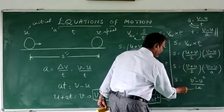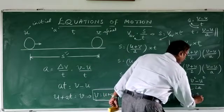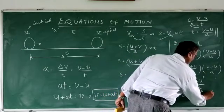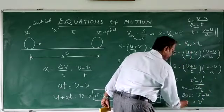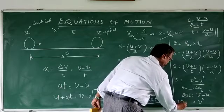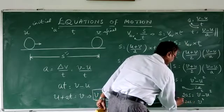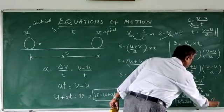So, bring this 2A up here. 2As is equal to V square minus U square. Or, keep V square up here. And bring minus U square here. V square is equal to U square plus 2As. And this is the third equation of motion.